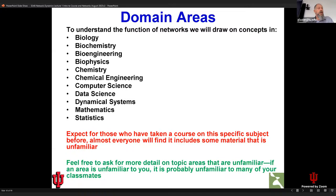To understand how networks work in the context of biology, we're going to use a little bit of a lot of things: biology, biochemistry, bioengineering, a little biophysics, classical chemistry, definitely some computer science, a little bit of data science, dynamical systems and mathematics more generally, a little bit of statistics. Again, none of this is at a very high level.